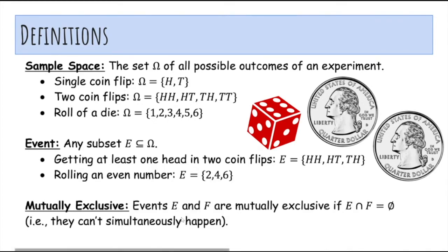Events E and F are considered mutually exclusive if their intersection is empty, so that means that they cannot both happen at the same time. For example, if E is the event that I roll 2, 4, 6, and F is 1 or 3, then the intersection is empty, so they are mutually exclusive because no outcome is in both of these events.